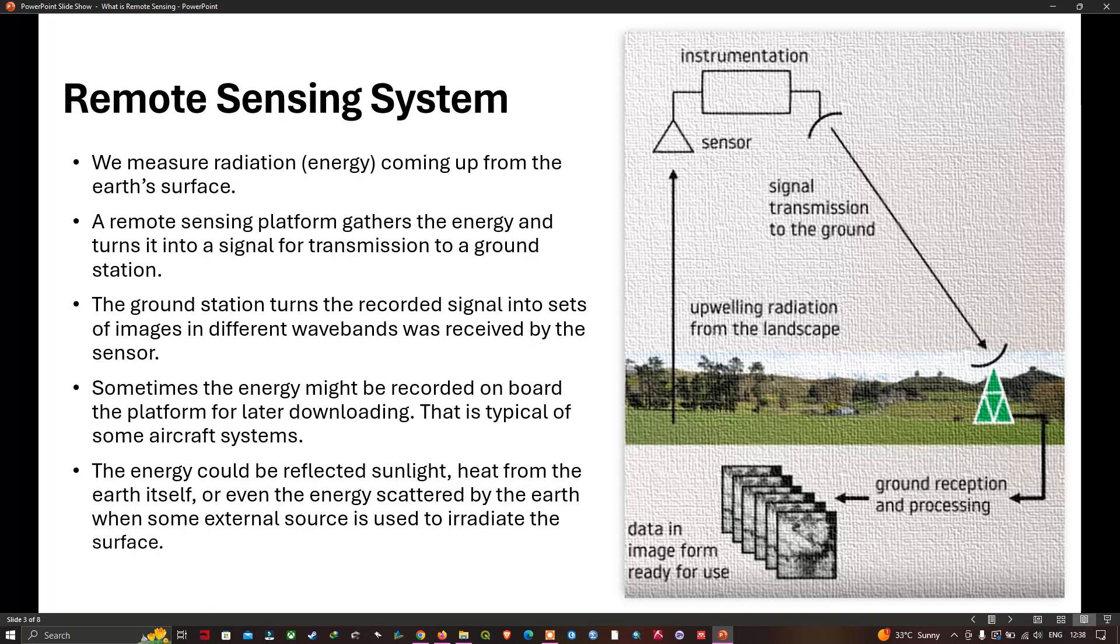The remote sensing system consists of a sensor which can detect energy coming from the earth's surface, followed by some form of instrumentation which can convert the measured energy into an electrical signal for sending that signal to the earth's surface. The ground station turns the recorded signal into a set of images in different wave bands as received by the sensor.